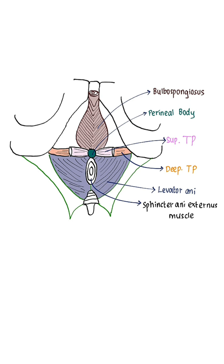Anal canal — and two unpaired muscles. Behind the perineal body you can see the sphincter ani externus muscle. The two unpaired muscles are external anal sphincter and longitudinal muscle coat of anal canal.